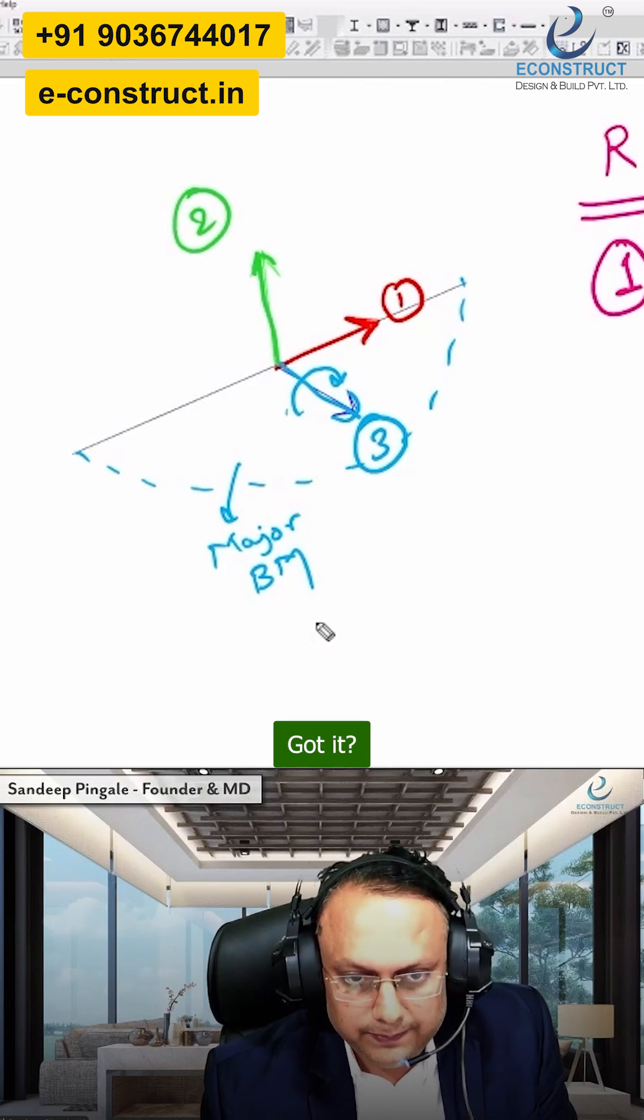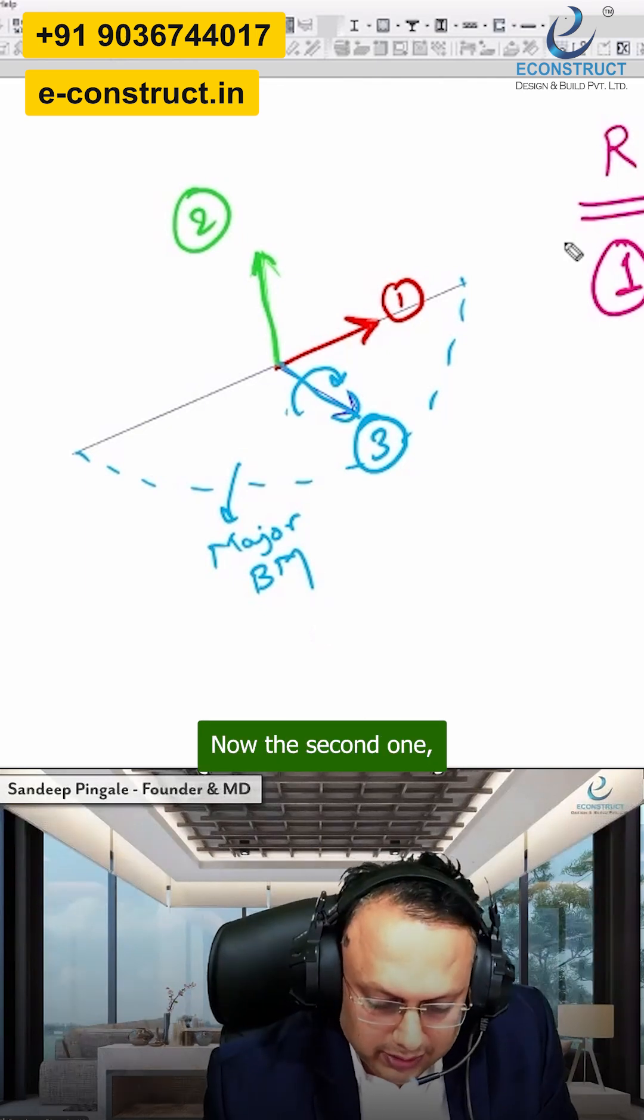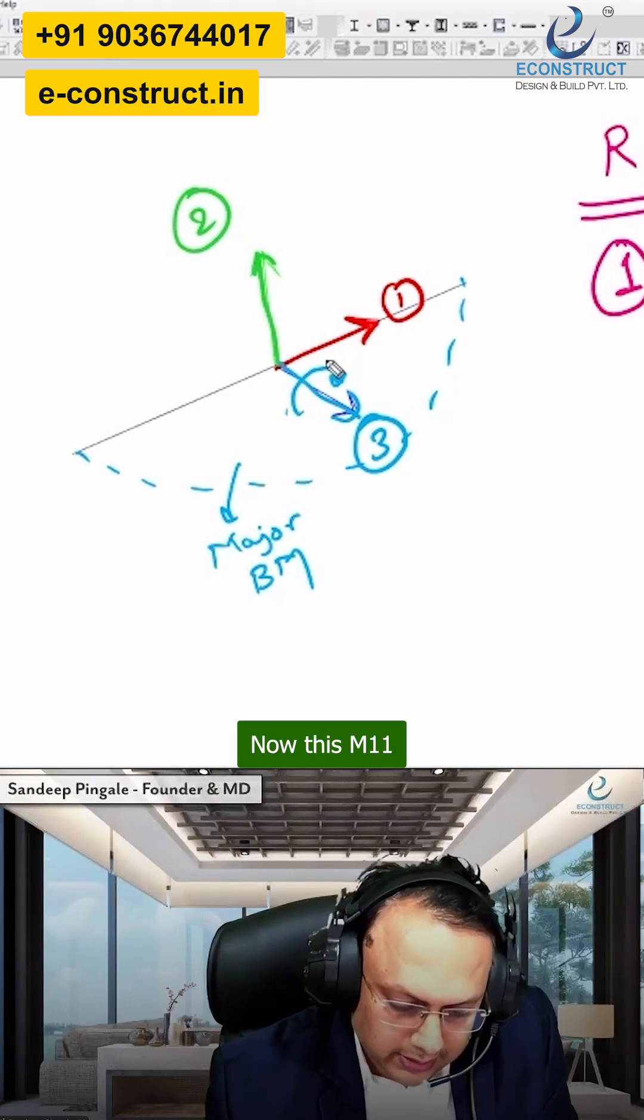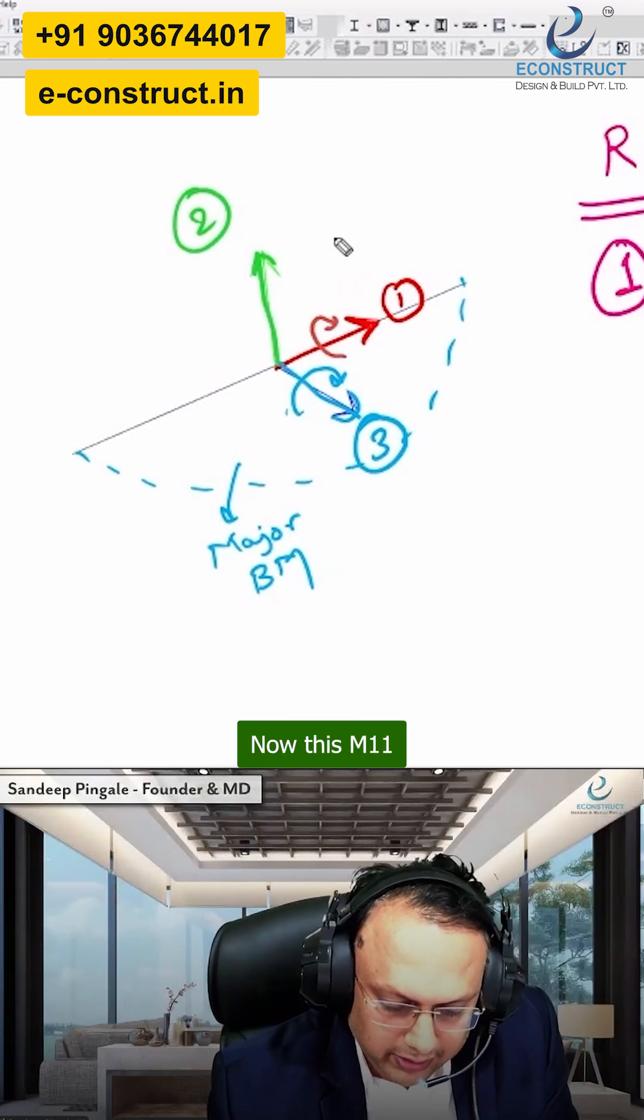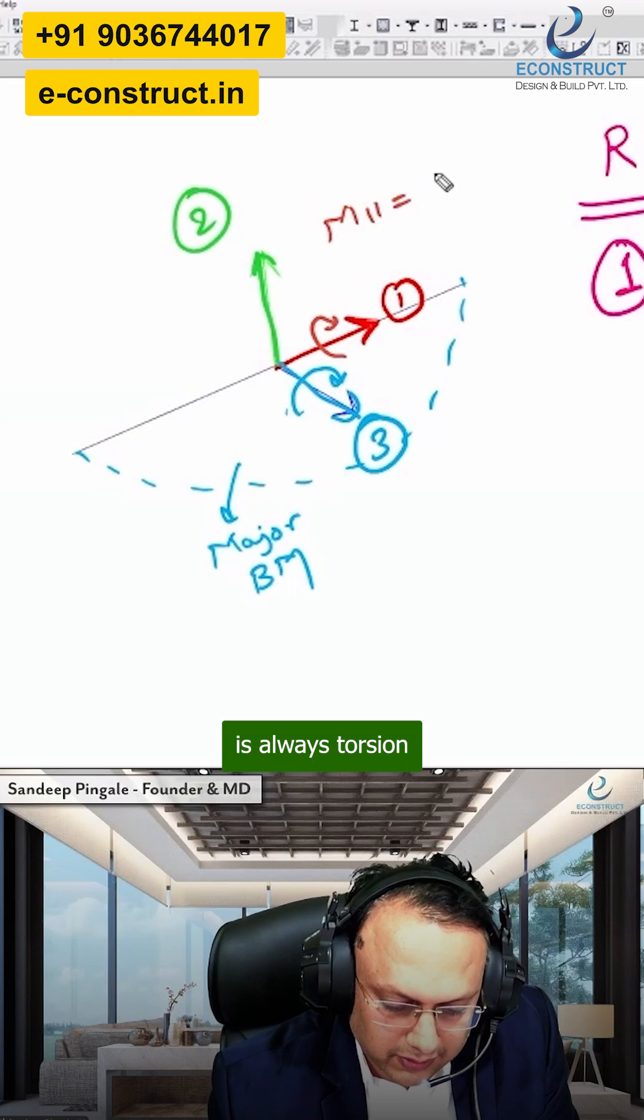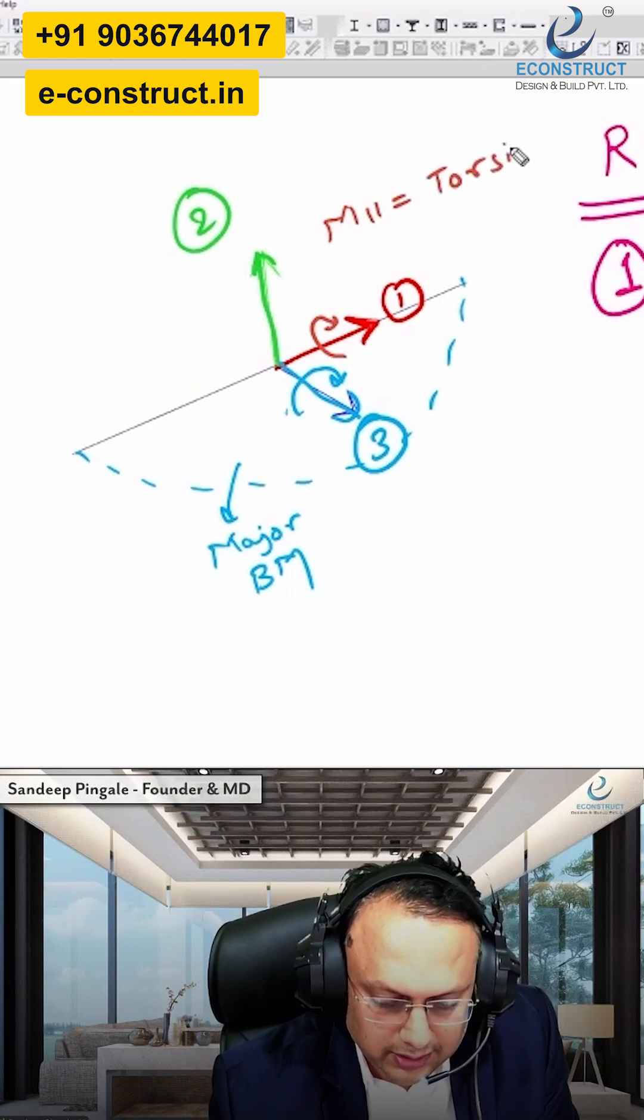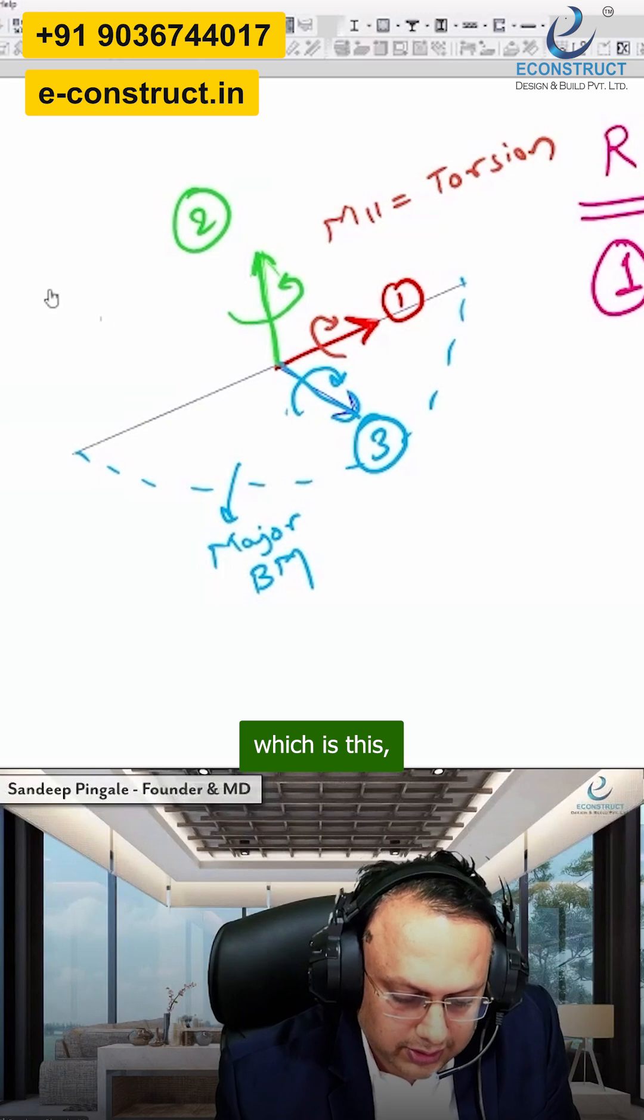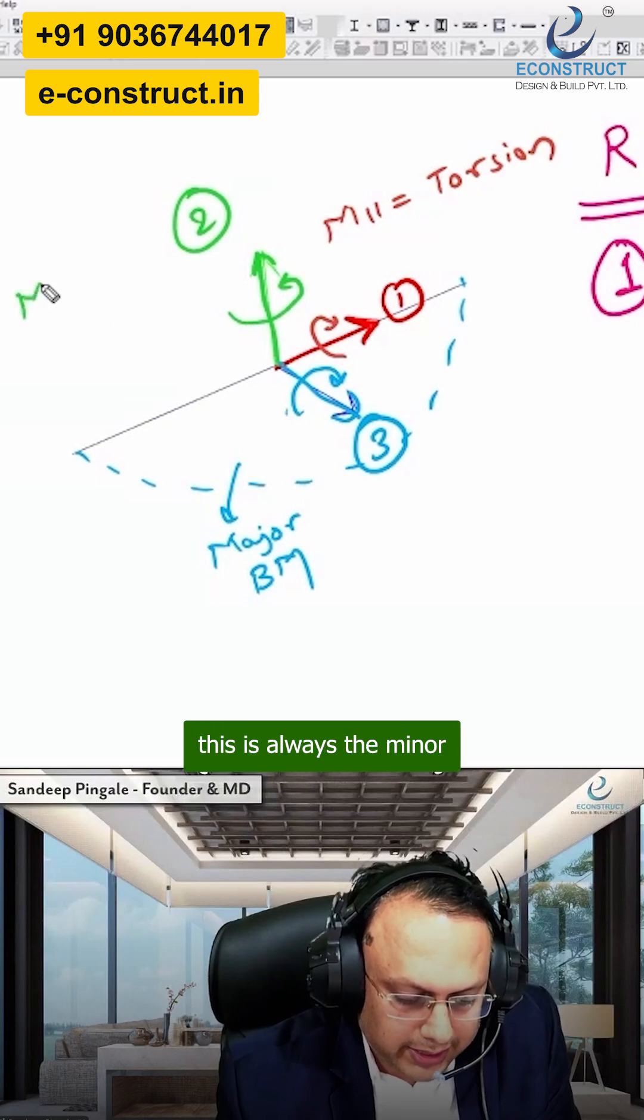Understood? Got it. Now the second one, basically what we call as the red color - now this M11 is always torsion. Understood? And the green color, which is this, this is always the minor bending moment.